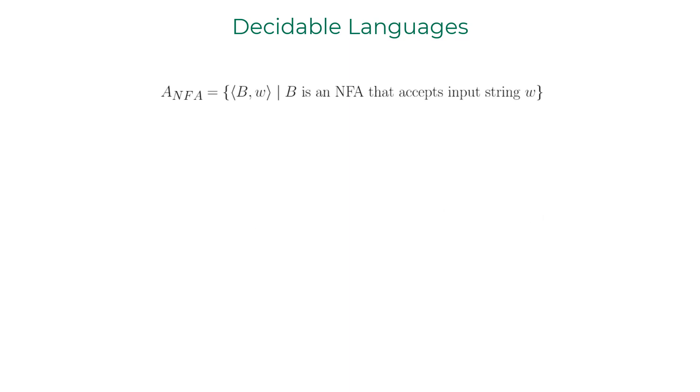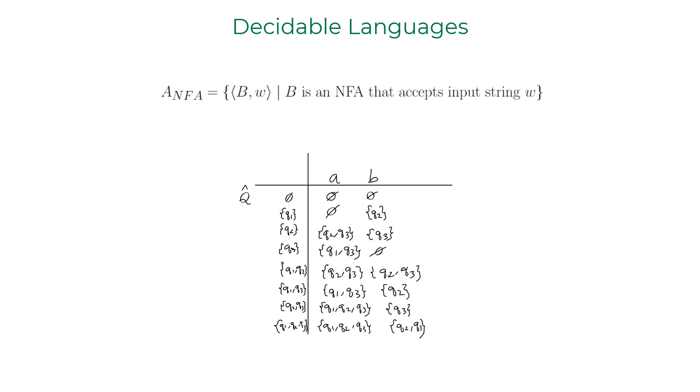Now, how about A_NFA? Turns out you can algorithmically convert an NFA to DFA using subset construction method, which you have learned earlier. Anything that can be algorithmically computed can be computed on a Turing machine. So you add an extra step of this NFA to DFA conversion and repeat the same procedure cited earlier.